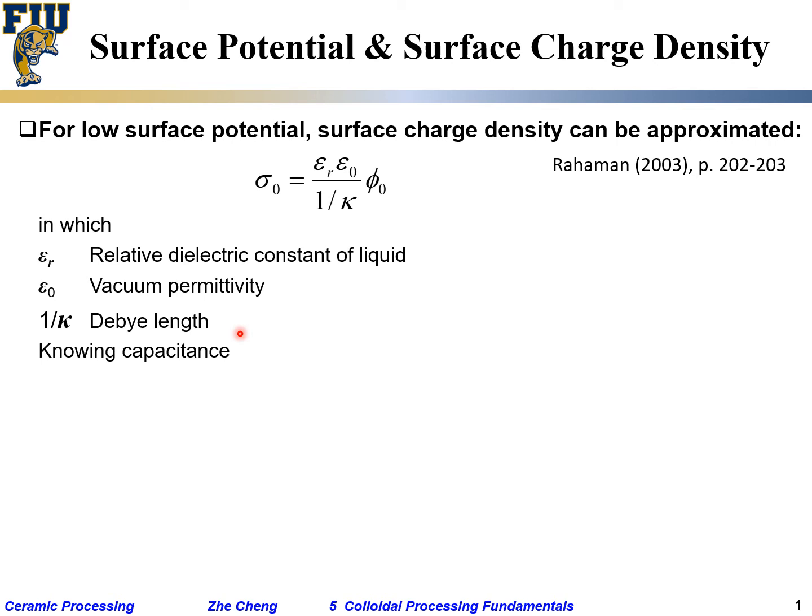By changing the electrolyte concentration or different types of electrolyte, and based on physics, we have the capacitance for parallel surfaces—it's just the dielectric constant divided by the thickness.